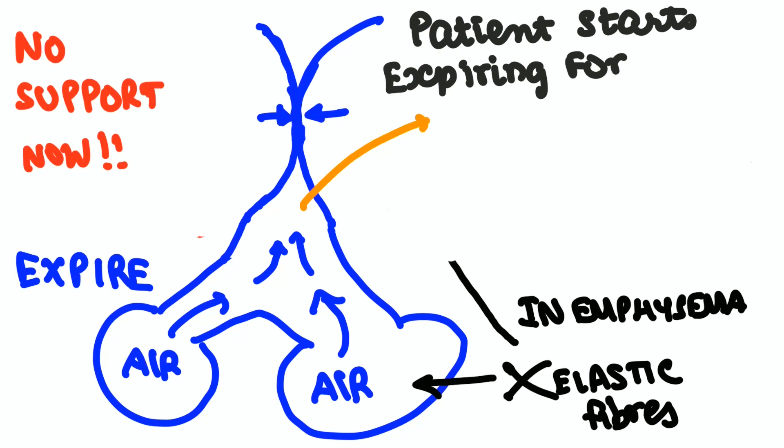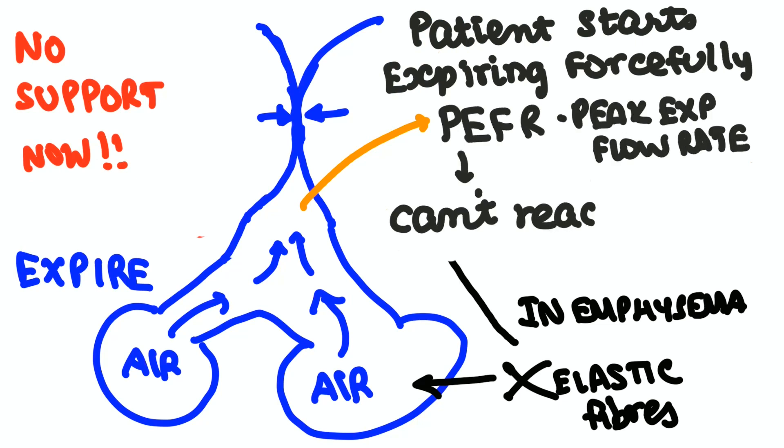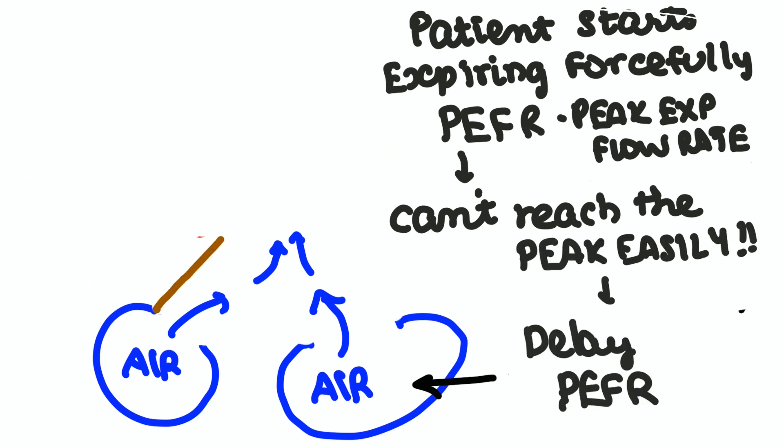When you ask the patient to expire forcefully after taking a deep inspiration, which is peak expiratory flow rate, they can't reach the peak easily. So there will be a drop in peak expiratory flow rate in COPD patients.